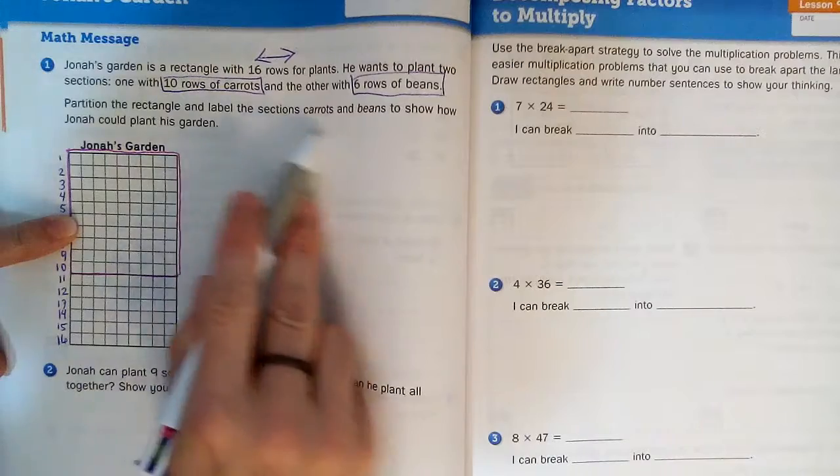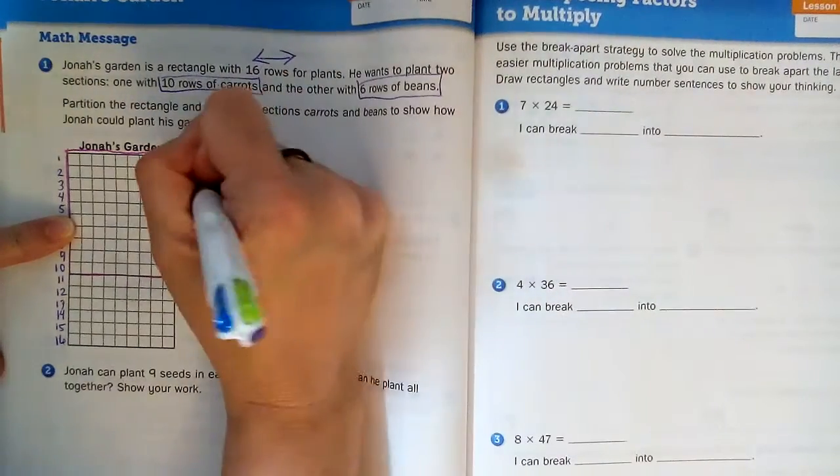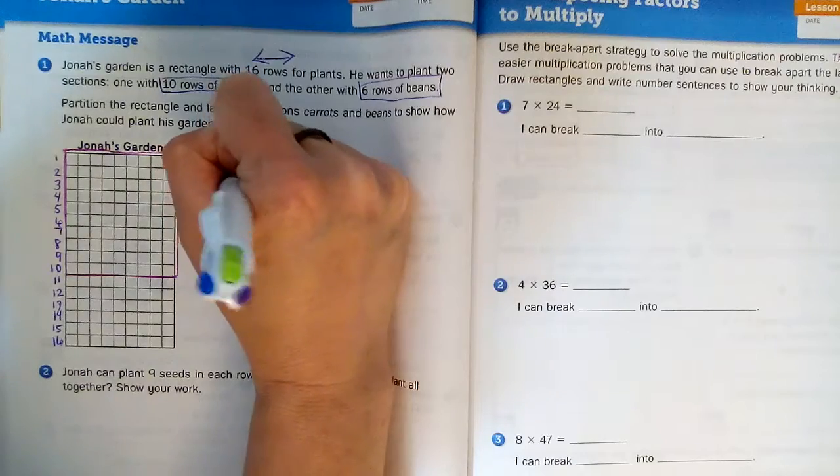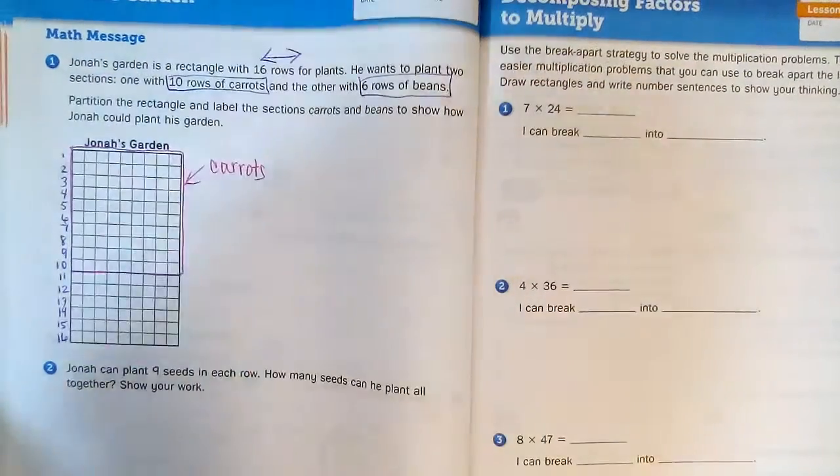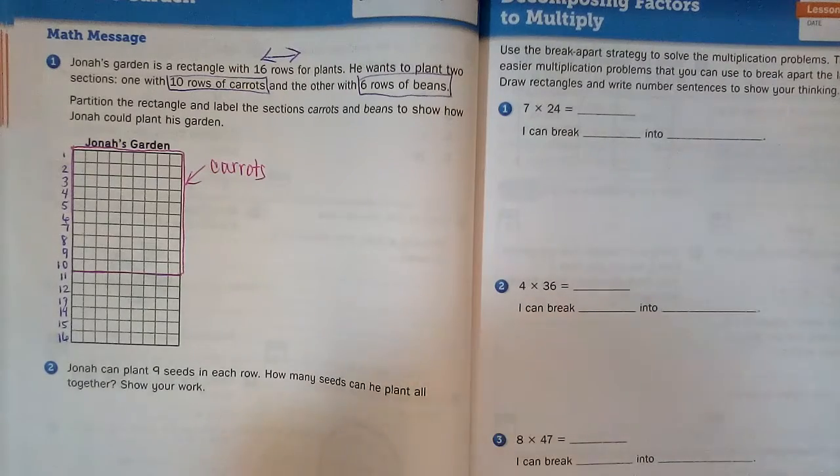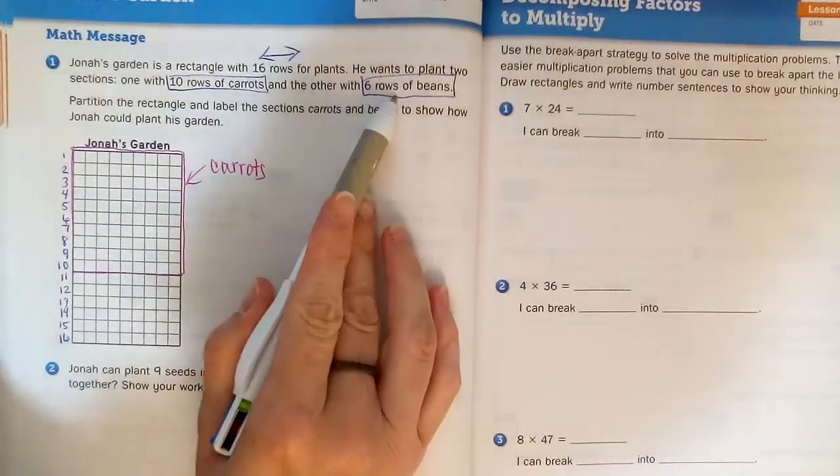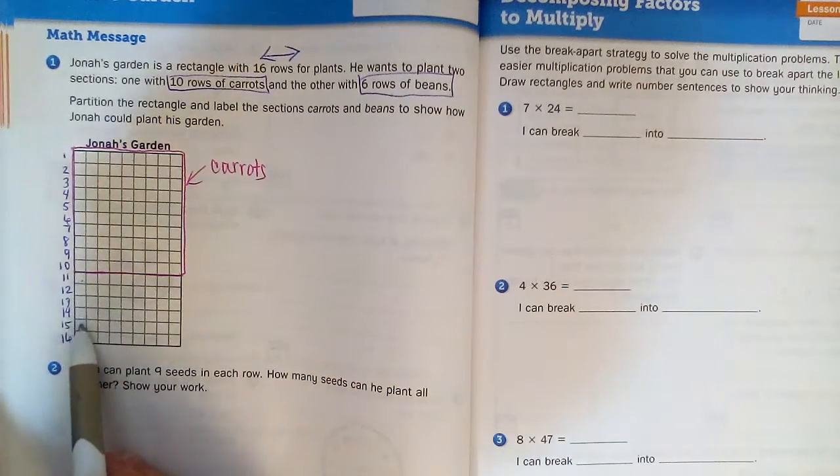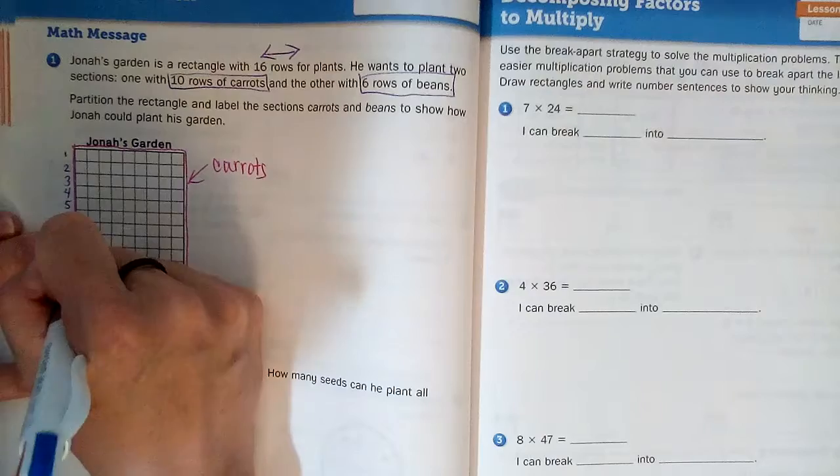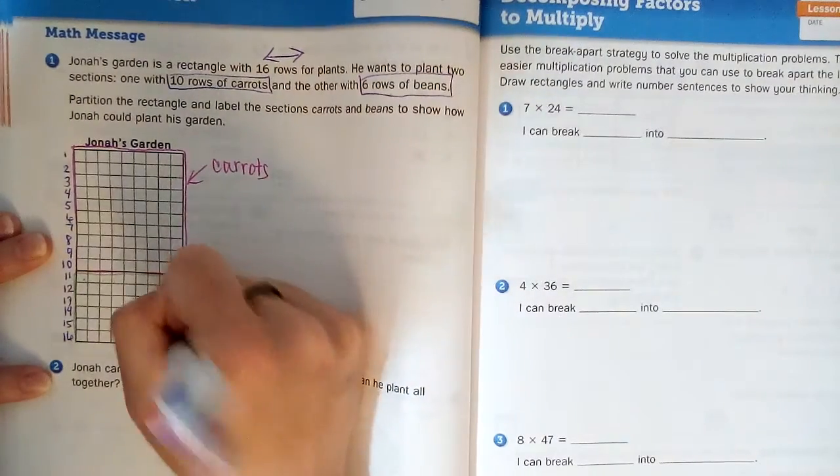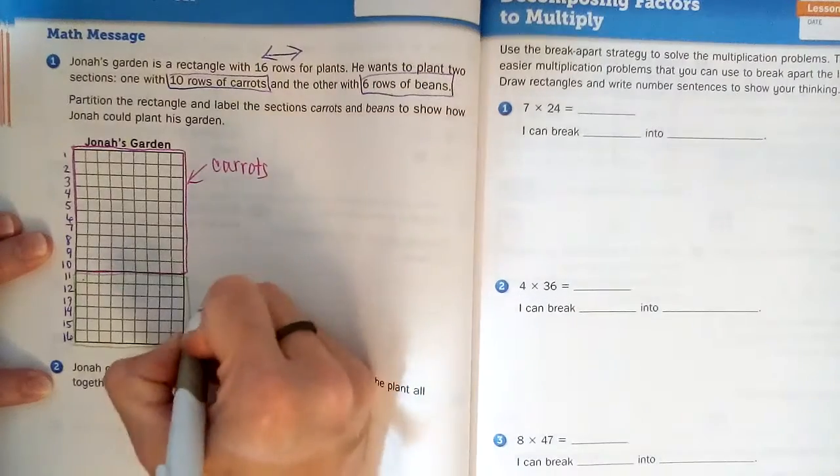It says label carrots and beans. This one's carrots, and since beans are green, and it says there's six rows, let's double check though: 1, 2, 3, 4, 5, 6. Yay! Okay, so I'm gonna put green here and label this one beans.